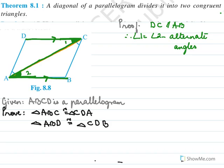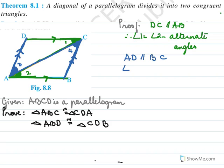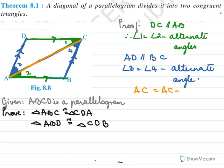Now we have another pair of parallel lines. AD is parallel to BC. Because AD is parallel to BC, by drawing the Z for alternate angles, we have angle 3 equal to angle 4, also alternate angles. And we have AC as the common side — AC equals AC, common.